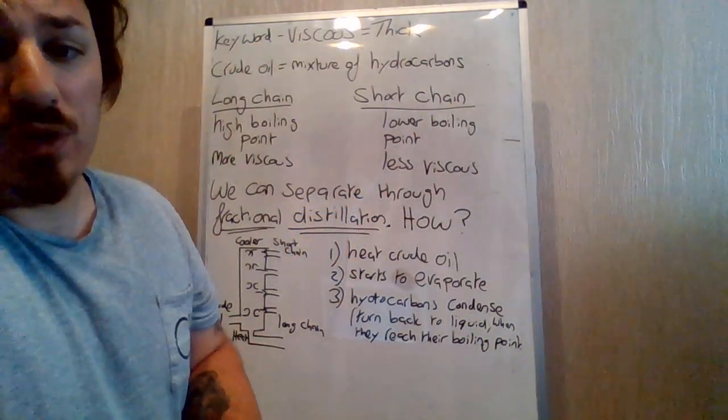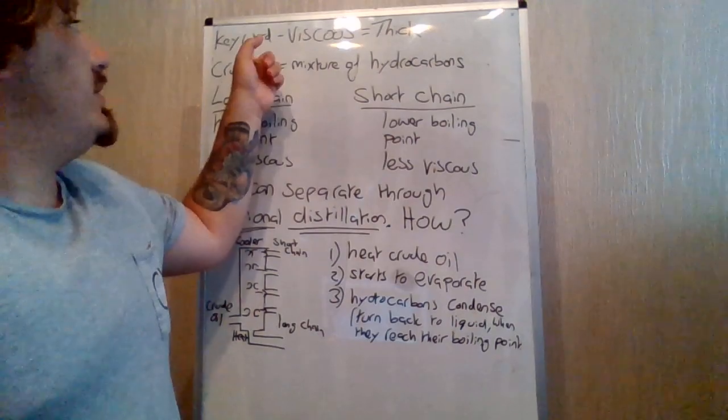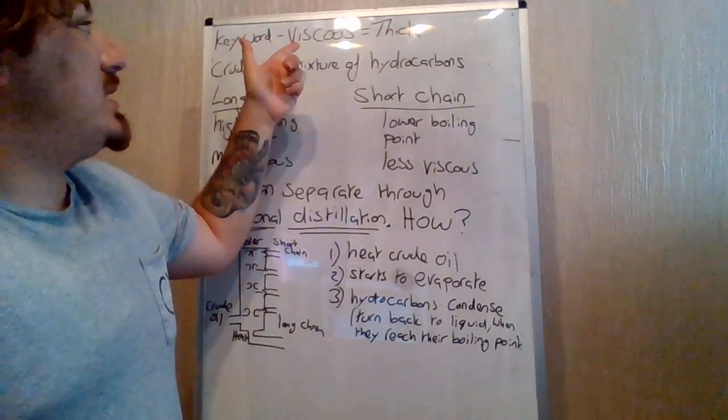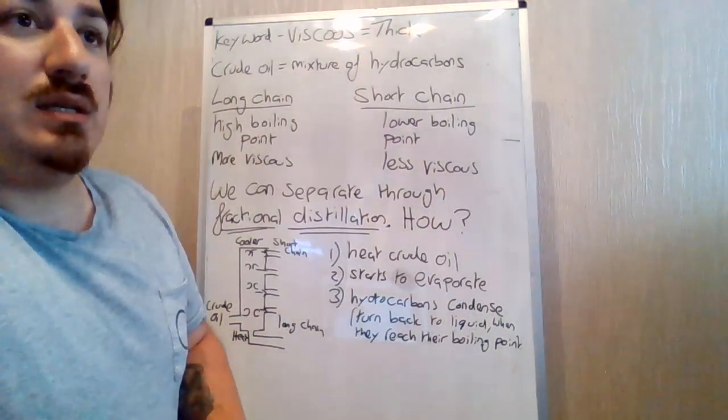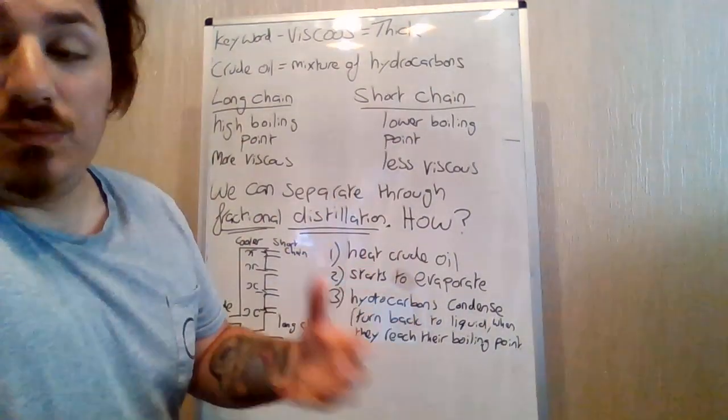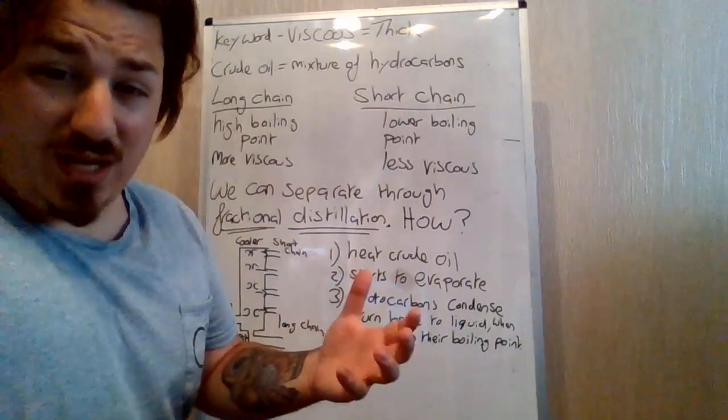There's one word that I would put as a key word, which is viscous, here at the top. So the key word is viscous, viscous just means how thick something is. So if I was going to put it into context, I'd say oil is more viscous than water, so it has more thickness to it.